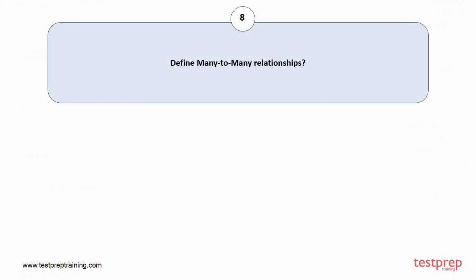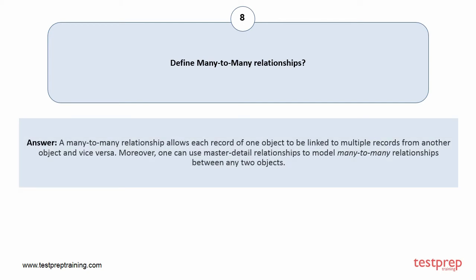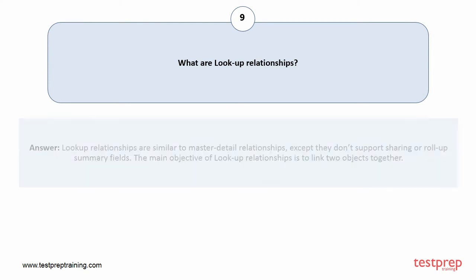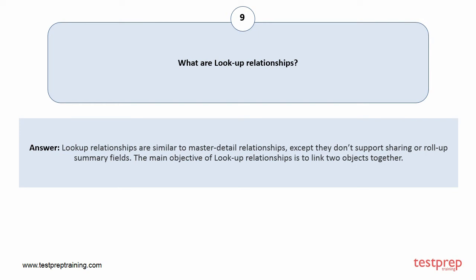Question number eight: define many-to-many relationships. A many-to-many relationship allows each record of one object to be linked to multiple records from another object and vice versa. Moreover, one can use master detail relationships to model many-to-many relationships between any two objects. Question number nine: what are look-up relationships? Look-up relationships are similar to master detail relationships, except they don't support sharing or roll-up summary fields. The main objective of look-up relationships is to link two objects together.